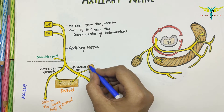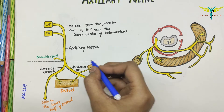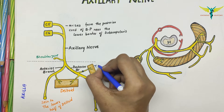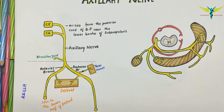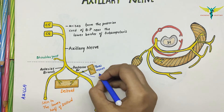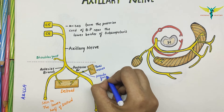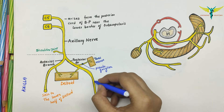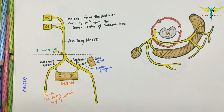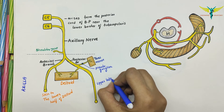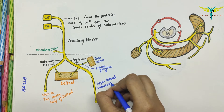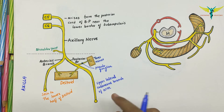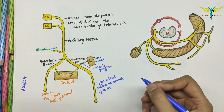The posterior branch innervates the teres minor muscle and forms a pseudo ganglion. This posterior branch also gives a branch to the deltoid, and further continues as the upper lateral cutaneous branch of the arm, supplying the skin of the lower lateral part of the deltoid.